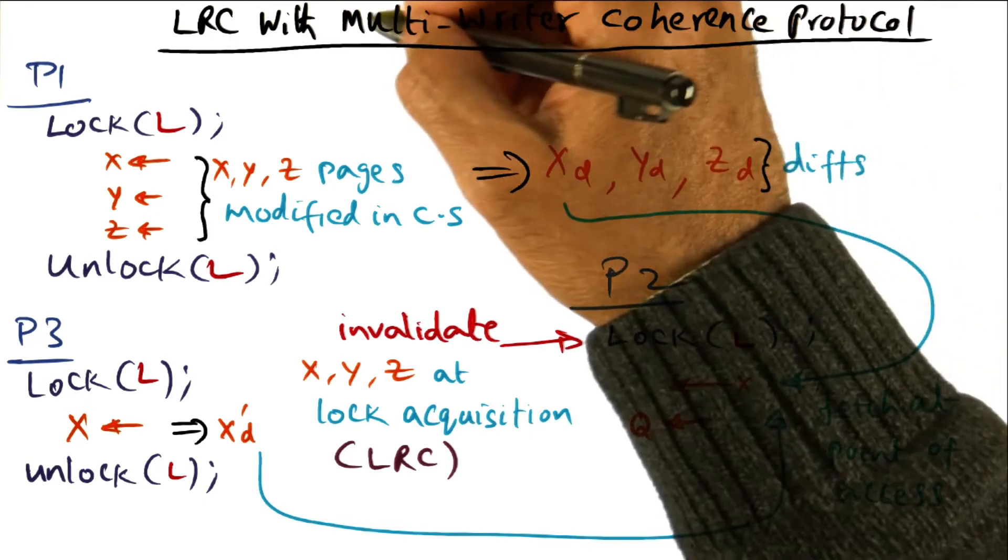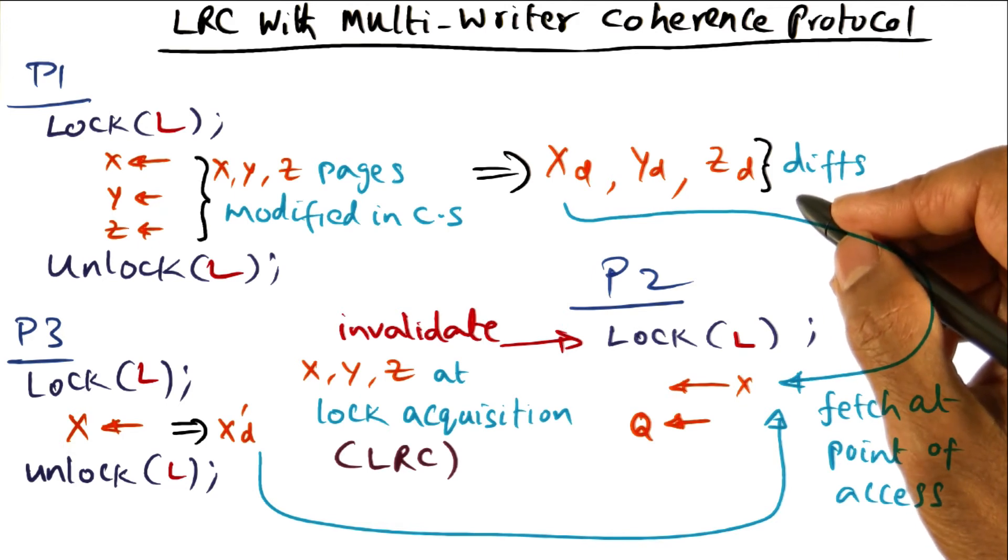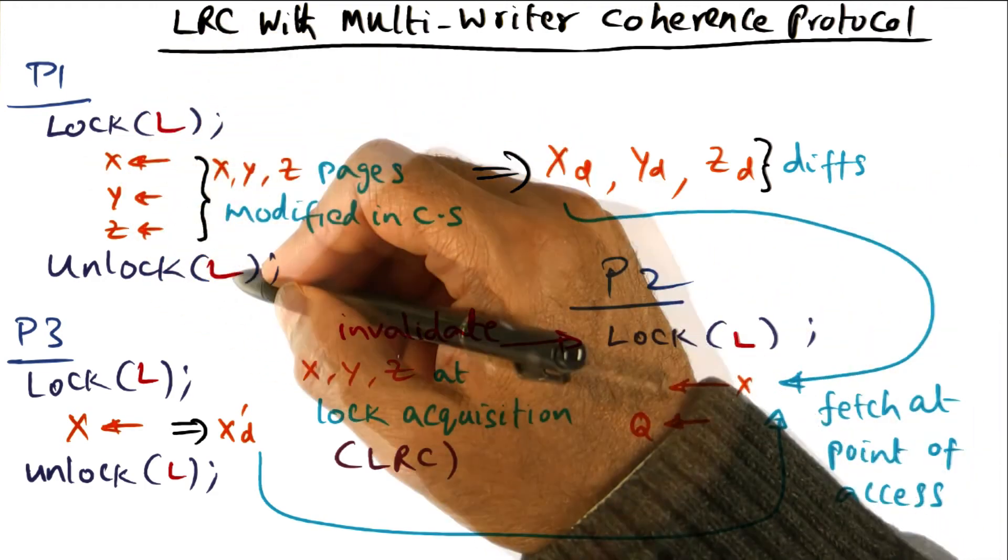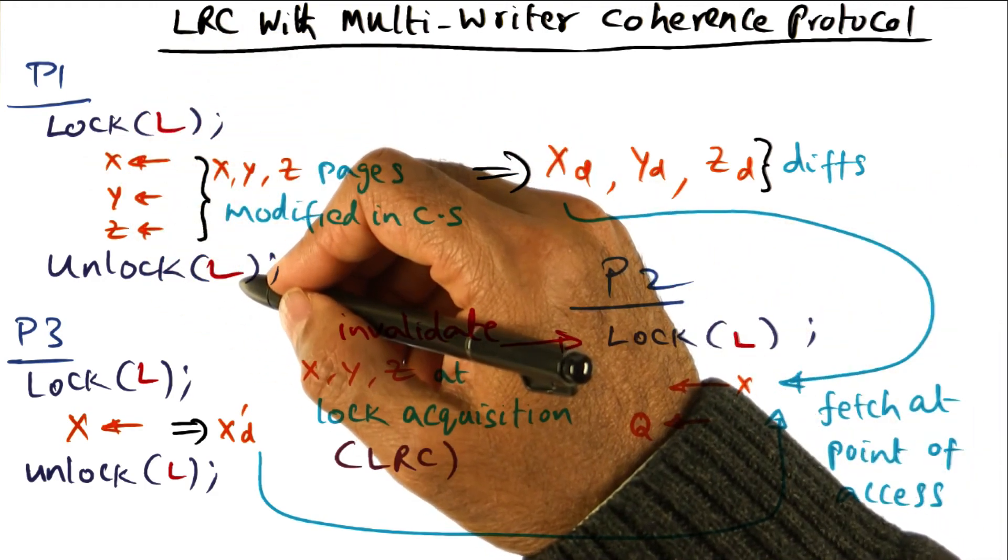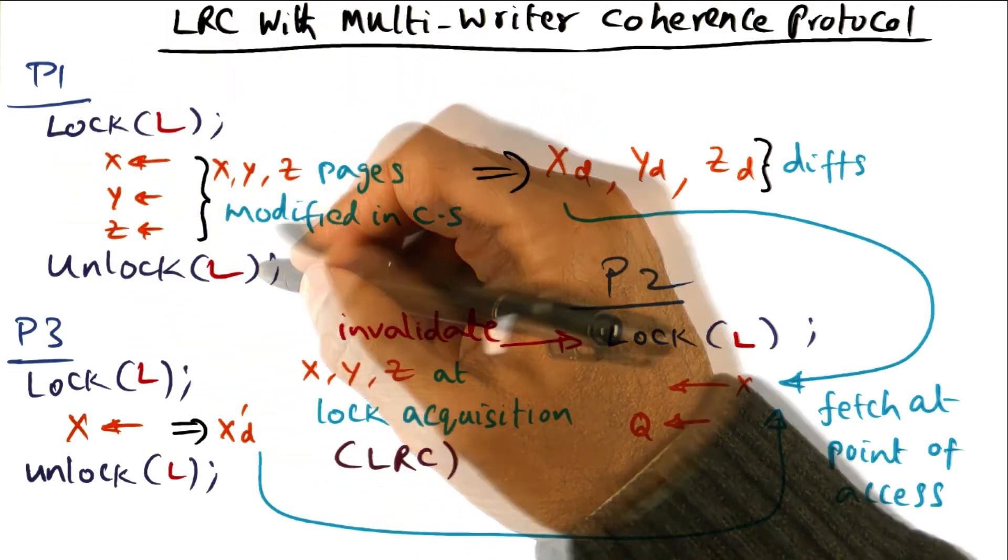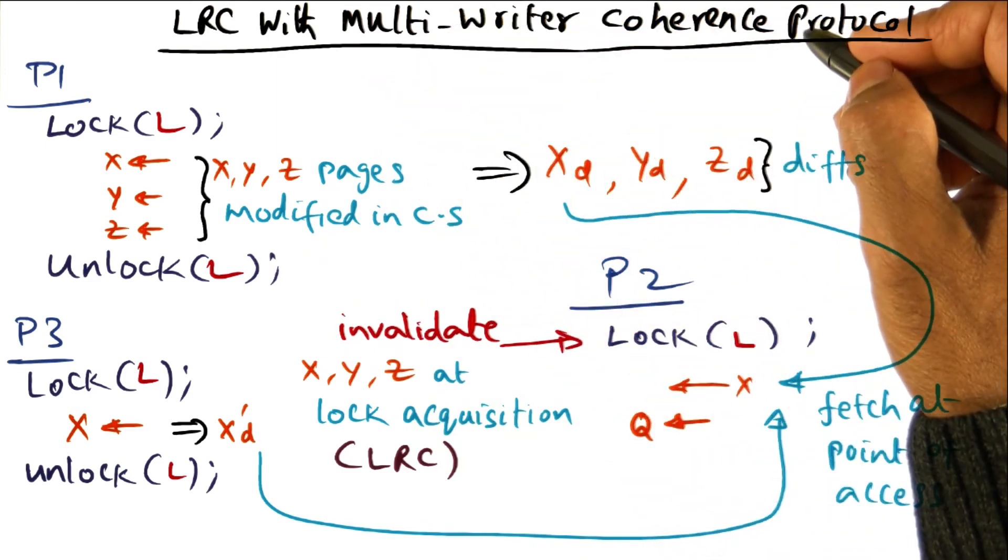So that's the important thing and that is where the multiple writer coherence protocol semantic comes in, that simultaneously the same page could be modified by several different threads on several different processors and that is perfectly fine, so long as they're using different locks. So the association between the set of changes to a page is only to the specific lock which is being used to govern that critical section. And this is the reason why this is called a multiple writer coherence protocol.